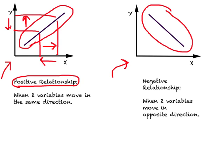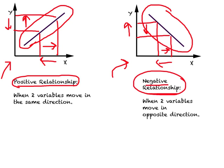This diagram shows a negative relationship. When you increase the value of X, the value of Y falls, and when you reduce the value of X, the value of Y increases. Whenever you see a downward sloping line or curve, it means a negative relationship — both variables move in opposite directions: when one increases, the other falls.